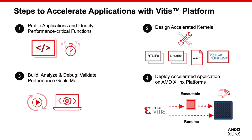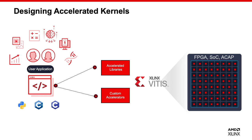Let's take a closer look at step 2. There are different ways to design your accelerated kernels, but they fall into two categories: one is using pre-optimized libraries, which is easy to run; and second, designing your own custom kernels with RTL, C, C++, or MATLAB Simulink. In my application, I will design my main kernel SSP with the VITES Accelerated Libraries, and I will write other kernels in C++.